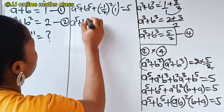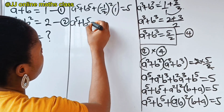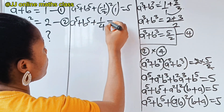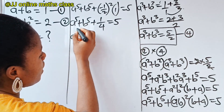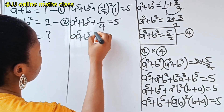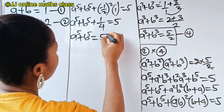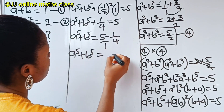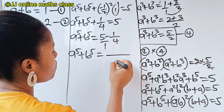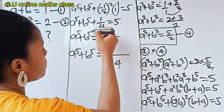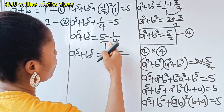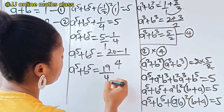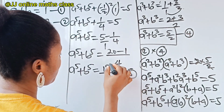So we have a to the power of 5 plus b to the power of 5 is equal to 5 minus 1 over 4. Using our shortcut: 4 times 1 is 4 as our denominator, and cross-multiplying gives 5 times 4 is 20, minus 1 times 1 is 1. So a to the power of 5 plus b to the power of 5 is 19 over 4. Let's call this equation 5.